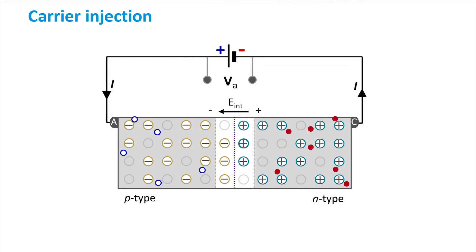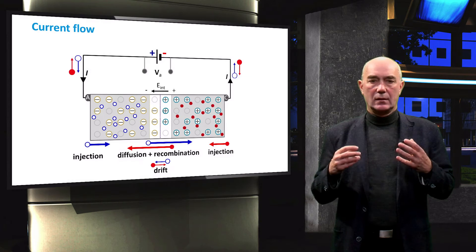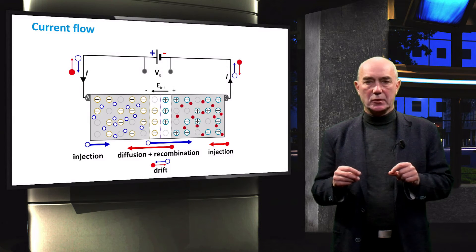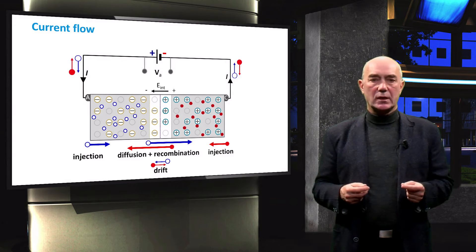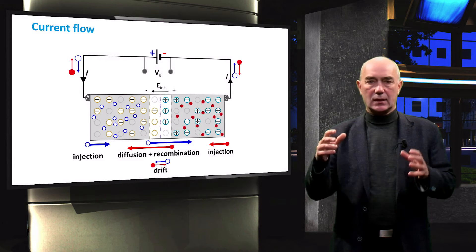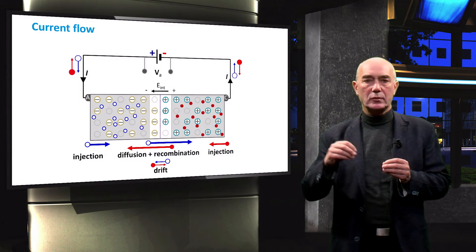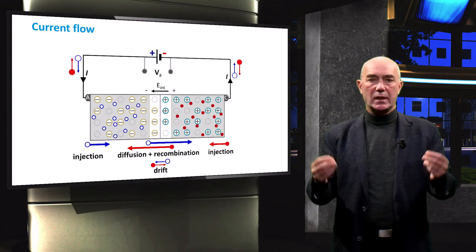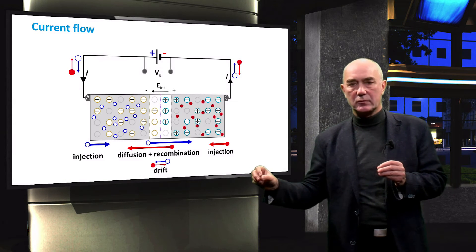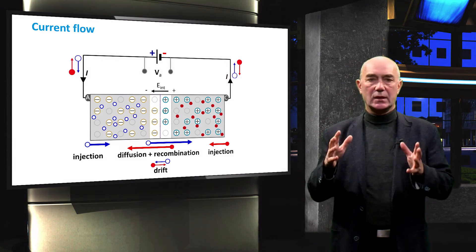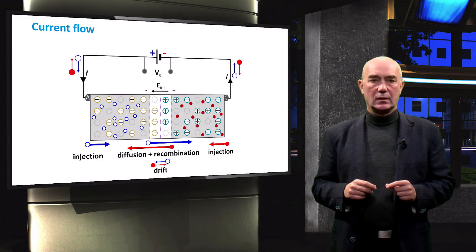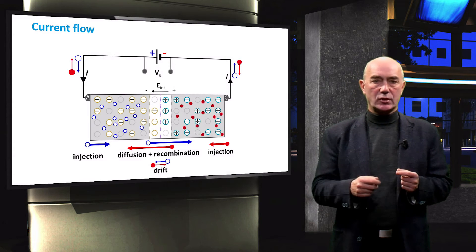The battery is a source of electrons that can replenish the carriers lost in the PN junction diode in the recombination process. Electrons flow from the electricity source into the cathode and from the anode into the battery. This process can be visualized by a flow of holes from the battery into the anode. Injection of carriers into the diode means that the recombination of minority carriers in the quasi-neutral regions is maintained, and we describe this situation as steady state.